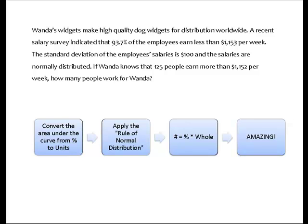So what I'm going to do is take really two steps. I'm going to convert the area under the curve from a percentage which I can get using my Z score and my normal distribution table. I'm then going to apply this amazing rule of normal distribution that says the area under the curve is equal to one. And then I'm going to do some fairly fundamental algebra in terms of how we can determine the part from the whole. And hopefully at the end you are going to go, wow, that was amazing.